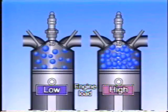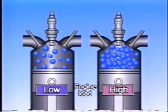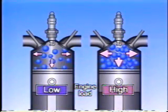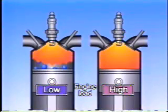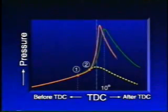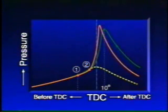If the load on the engine increases, the volume of the air-fuel mixture and the compression pressure inside the cylinder increase. The temperature of the air-fuel mixture goes up, and so the mixture burns faster. As a result, the combustion time gets shorter. This graph shows what happens — in this case, the ignition timing has to be retarded.